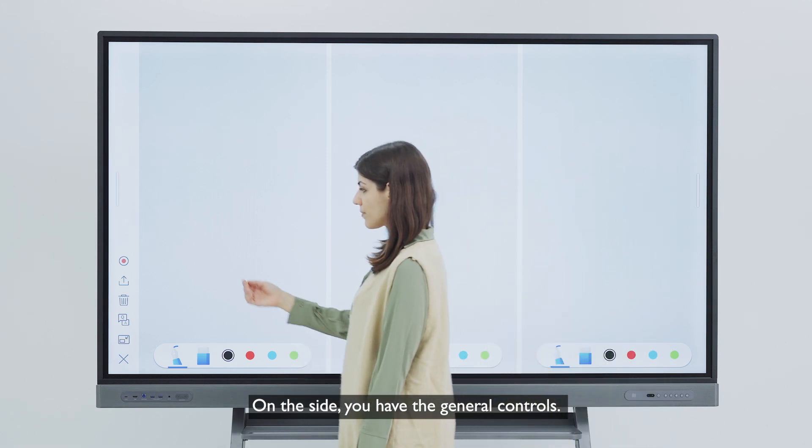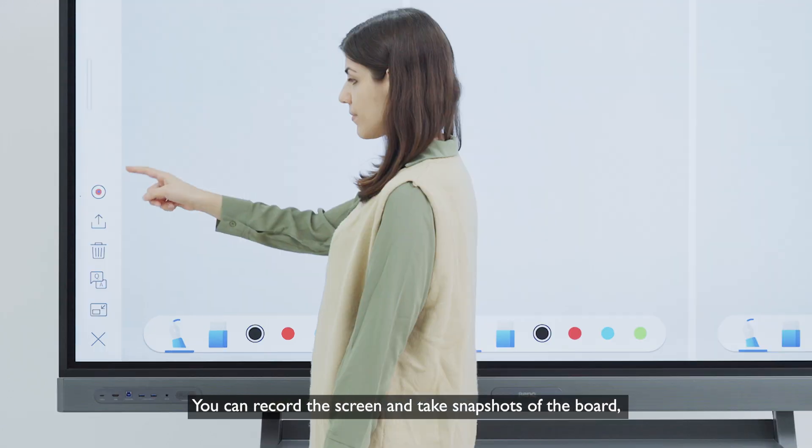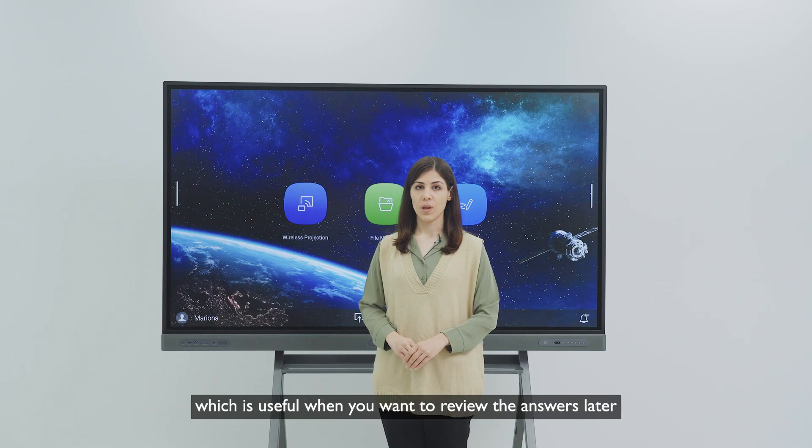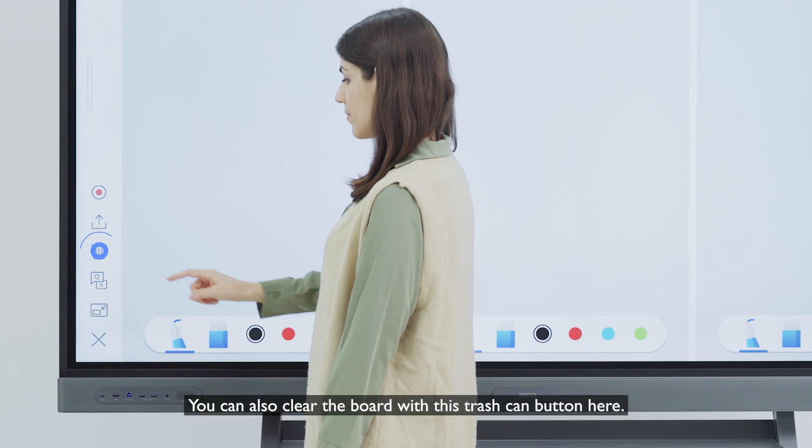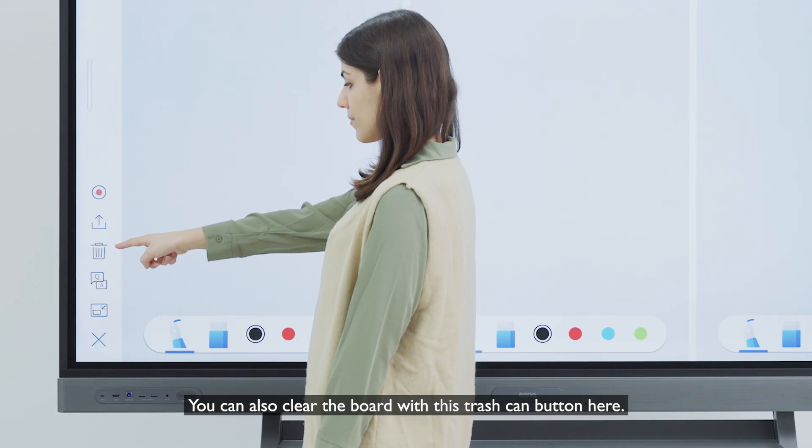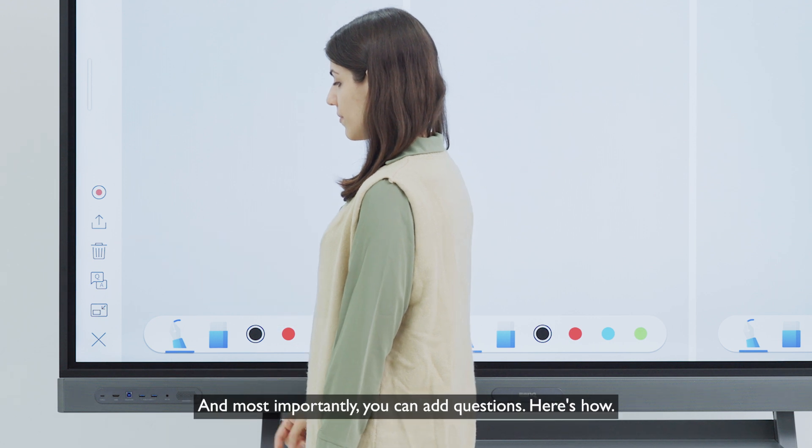On the side, you have the general controls. You can record the screen and take snapshots of the board, which is useful when you want to review the answers later. You can also clear the board with this trashcan button here, and most importantly, you can add questions. Here's how.